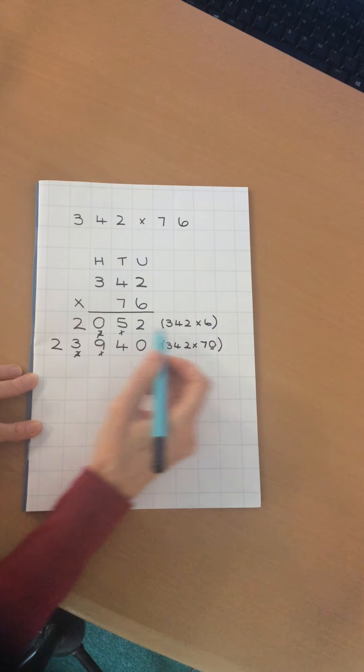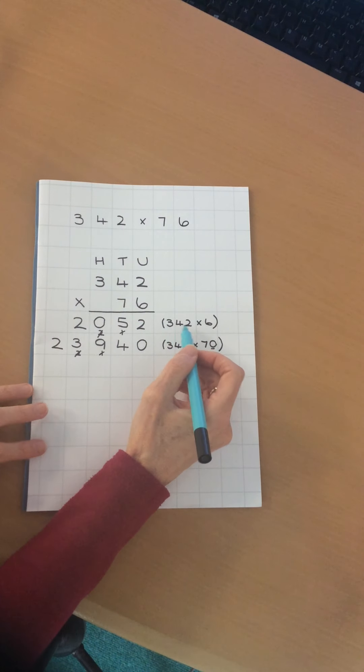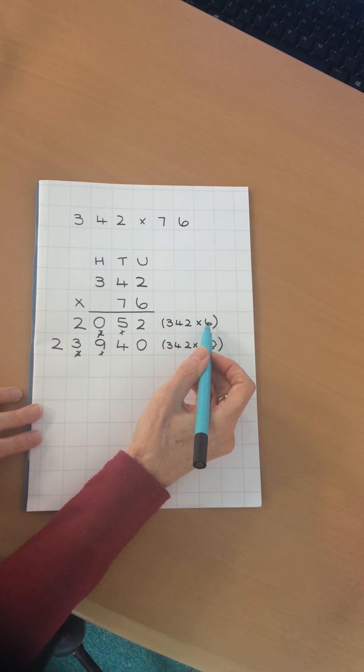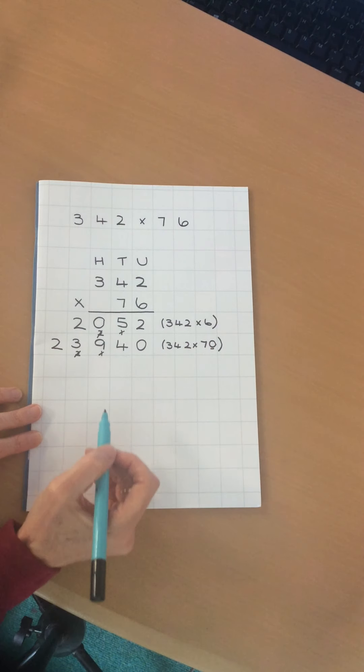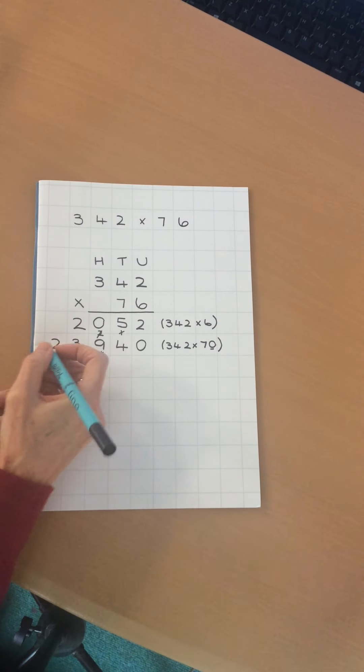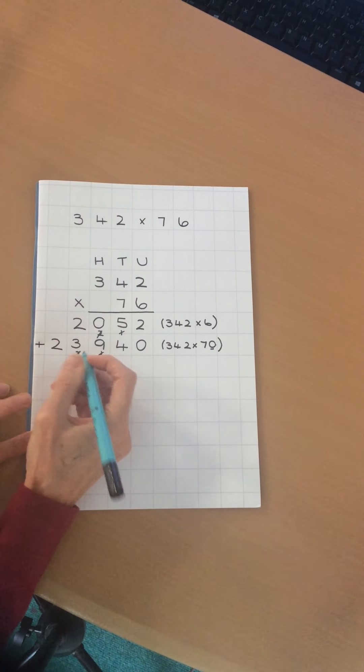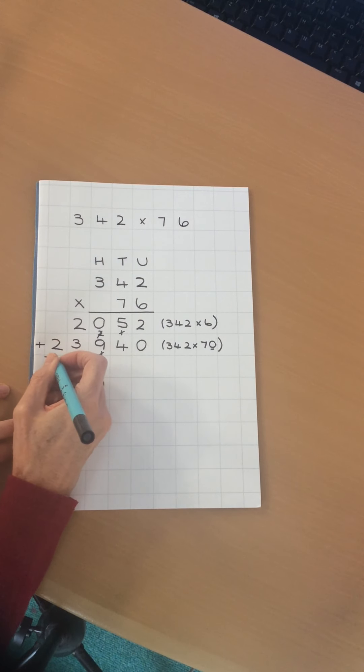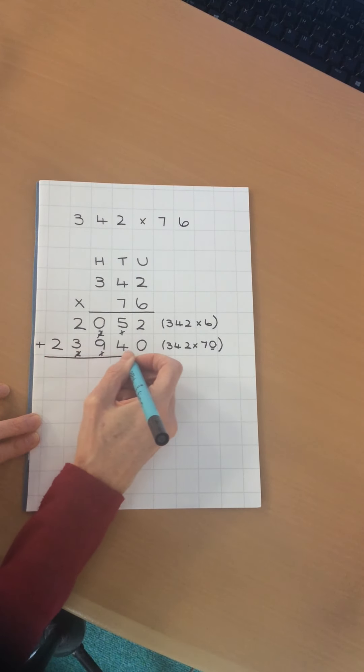So I've got my 2 rows of multiplication: 342 multiplied by 6 and 342 multiplied by 70. The final stage is to add those 2 rows of multiplication up. So I'm going to draw myself another line under here.